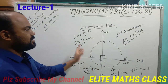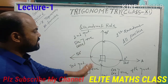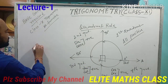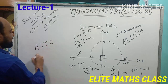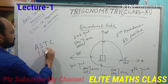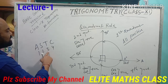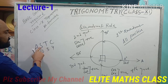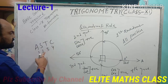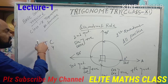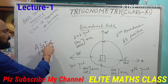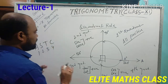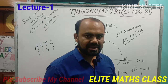You have to memorize this — this is a very important concept. In short, you can memorize it like this: ASTC. First quadrant: All positive. Second quadrant: Sine positive (and cosec also positive). Third: Tan positive (and cot also positive). Fourth quadrant: Cos positive (and sec also positive). So, the quadrant rule is clear.